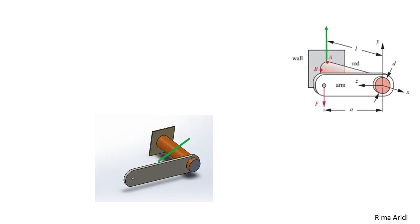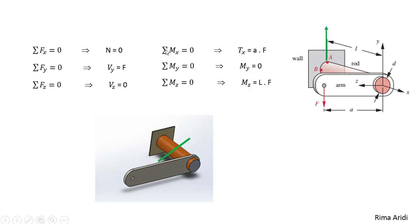Here, let's do a cut on the rod and apply Newton's first law, summation of force is equal to zero. Normal is equal to zero. The internal force Vy equal to F on the y-axis, and along the z-axis, there are no forces, so Vz equal to zero. Summation of moment equal to zero. On the x-axis, we have a torque, so Tx equal to F times A, the distance. On the y-axis, there is no moment, so M y equal to zero. On the z-axis, we have a bending moment, so M z equal to the force times the distance L.